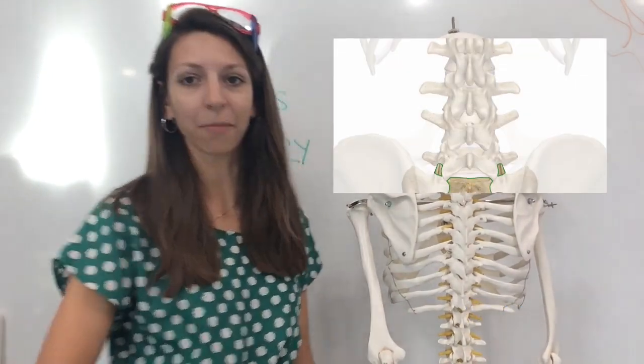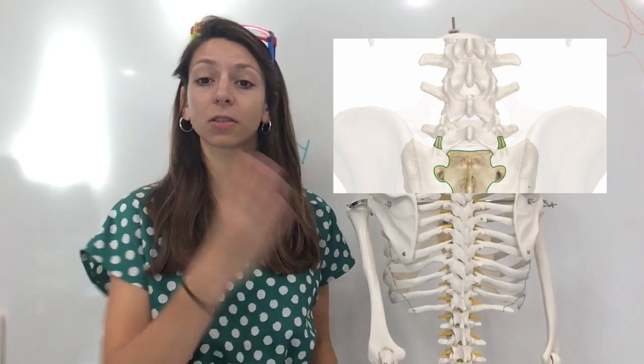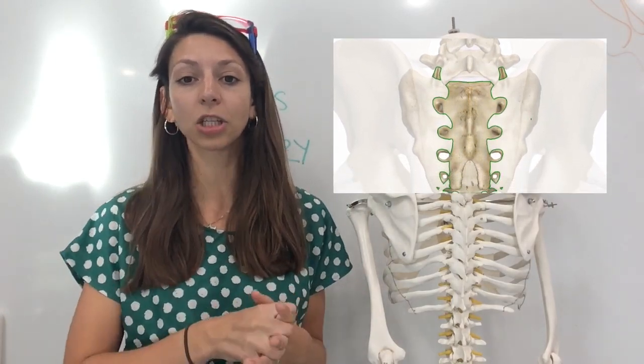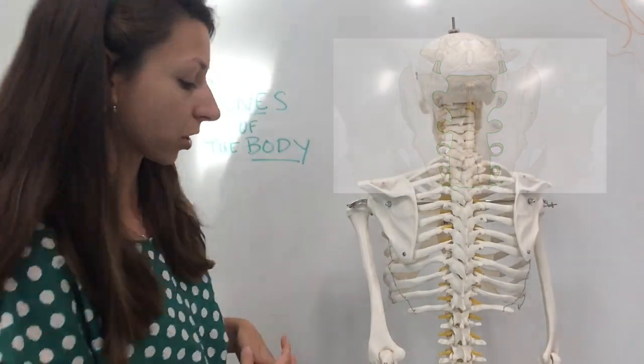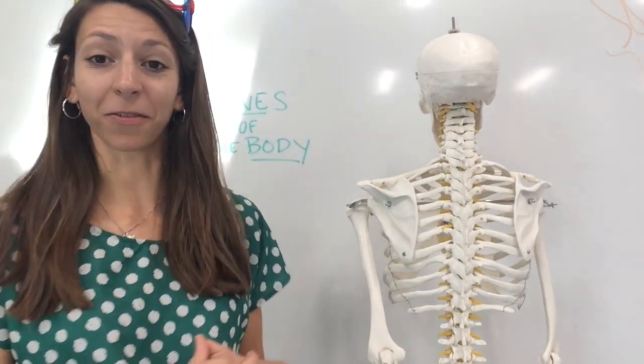Our sacrum is at the base of the vertebrae and has a triangular shape. Four other vertebrae gradually fuse into it between 18 and 30 years of age. And of course, our coccyx is our tailbone at the very bottom of the vertebral skeleton.